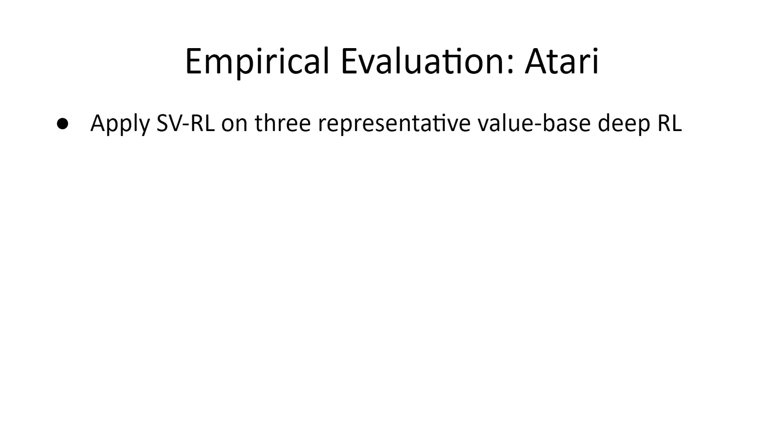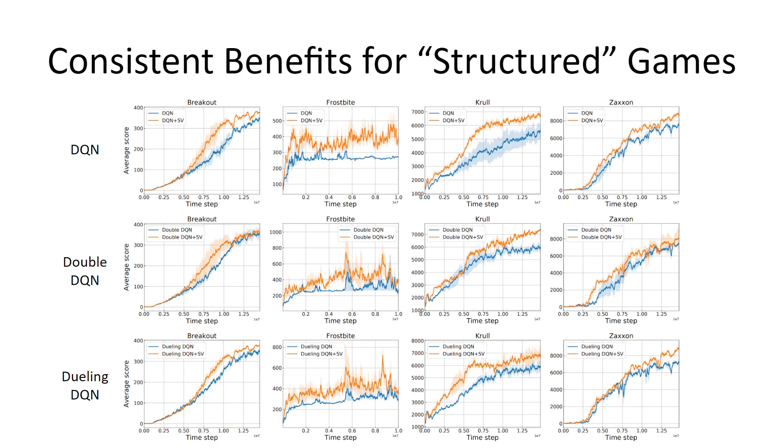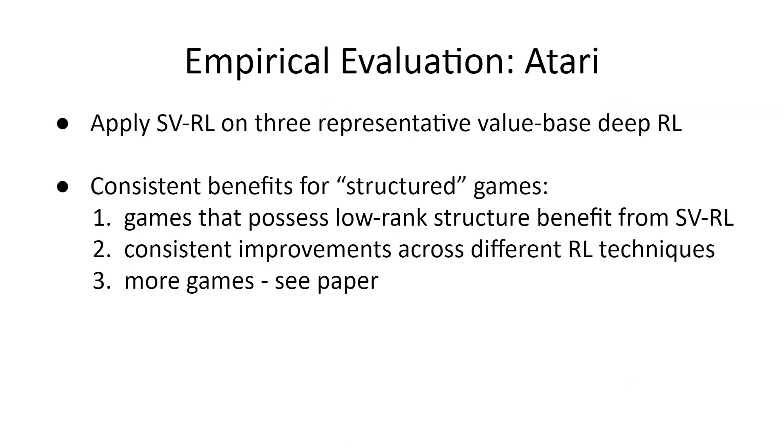Now we demonstrate the efficacy of SVRL. We apply it to three representative value-based methods, namely DQN, DoubleDQN, and DuelingDQN. Here, we show the performance for four Atari games, with orange curve being the results with SVRL included. These four games are verified to be low rank. It is clear that they indeed benefit from our approach. What's more important is that the improvement is consistent across different RL methods. This highlights the important role of the intrinsic method-independent structures of the tasks. We remark that such consistency has been tested for more games, and the results are well aligned with our expectation.